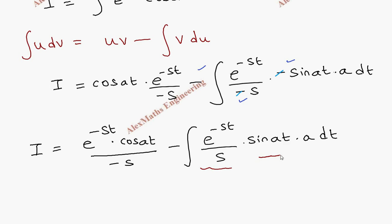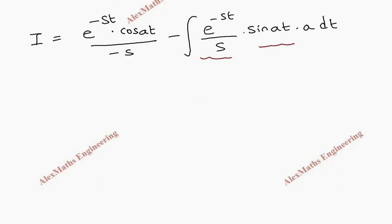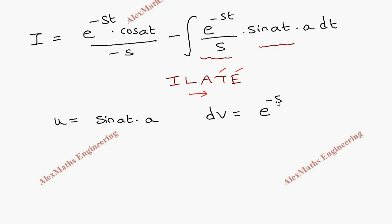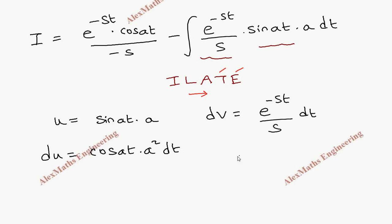Once again we find the product of two different functions, so we are going to apply integration by parts again. Using ILATE, the two functions present are e^(-st)/s which is exponential, and sin(at) which is trigonometric. In the ILATE order, whichever comes first is taken as u, which is sin(at) times a, and the other is dv, which is e^(-st)/s dt. The derivative du is cos(at) times a — since there is already an a, this becomes a² dt. Integrating dv gives v = e^(-st)/(-s), and since there is already an s, v = e^(-st)/(-s²), where the minus is separate and not inside the square.